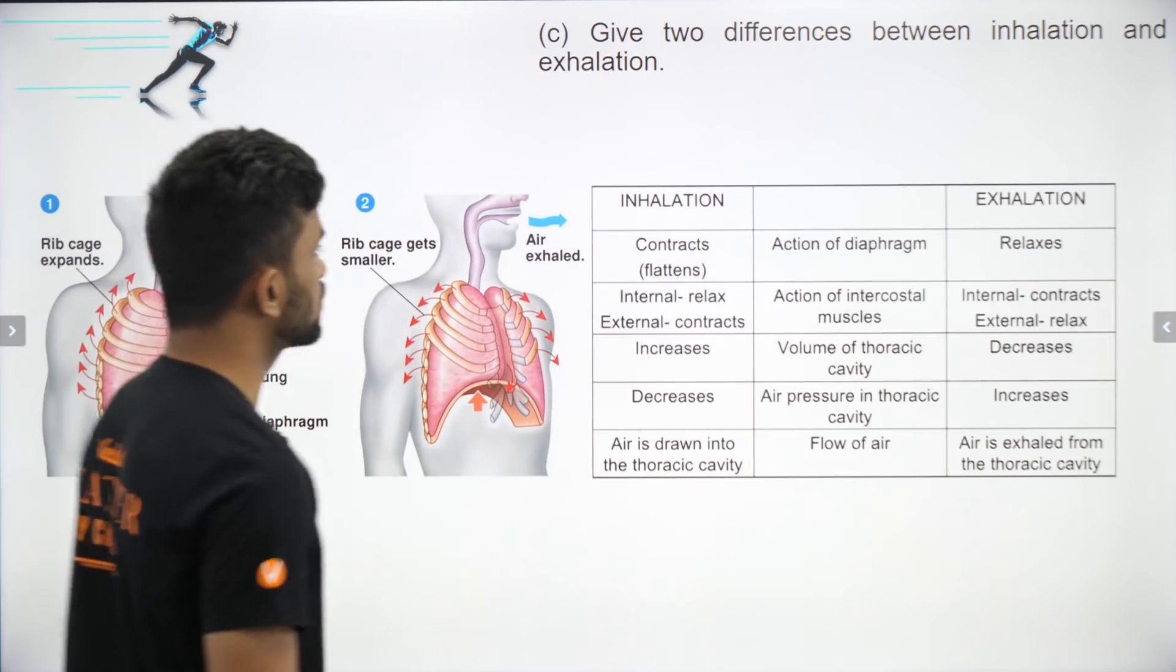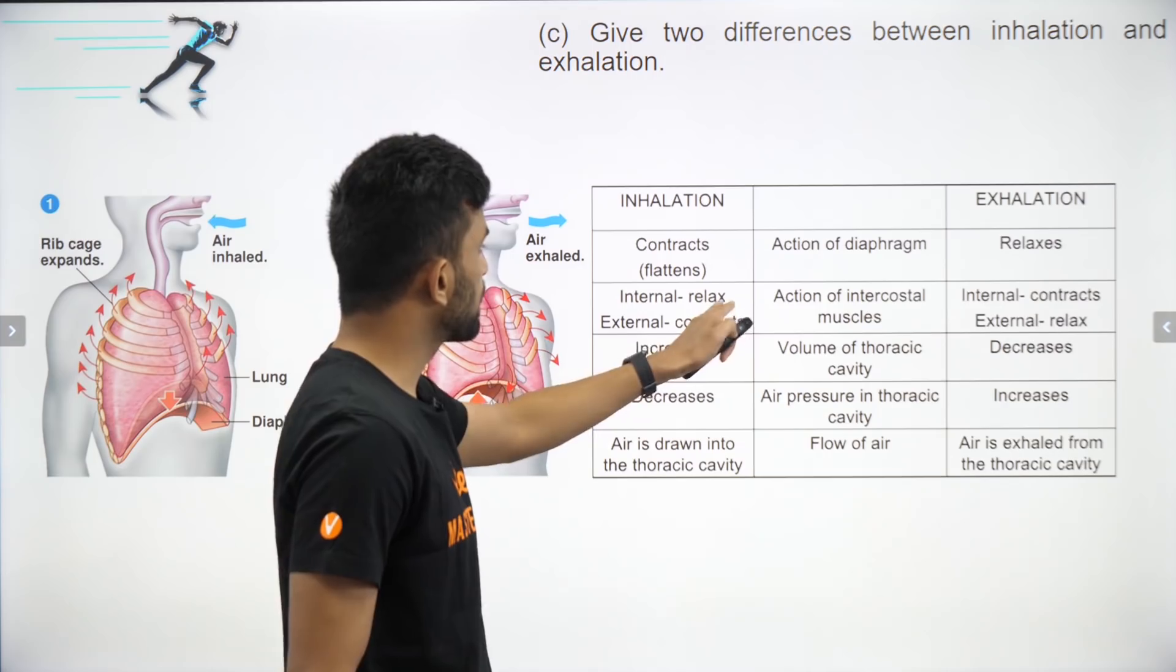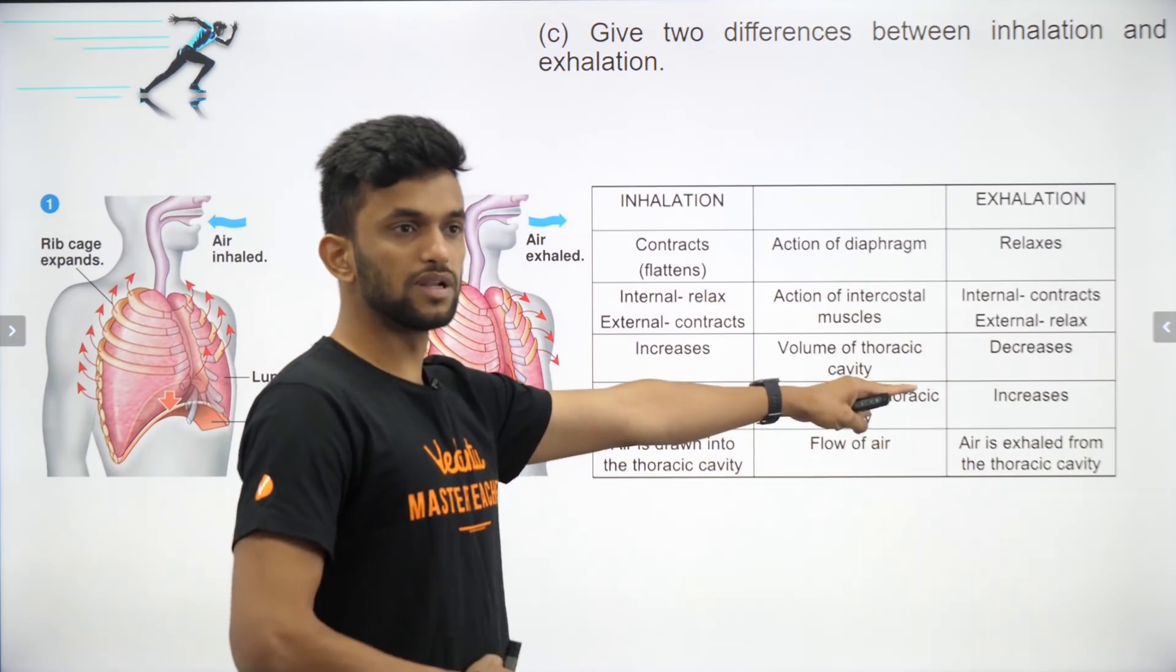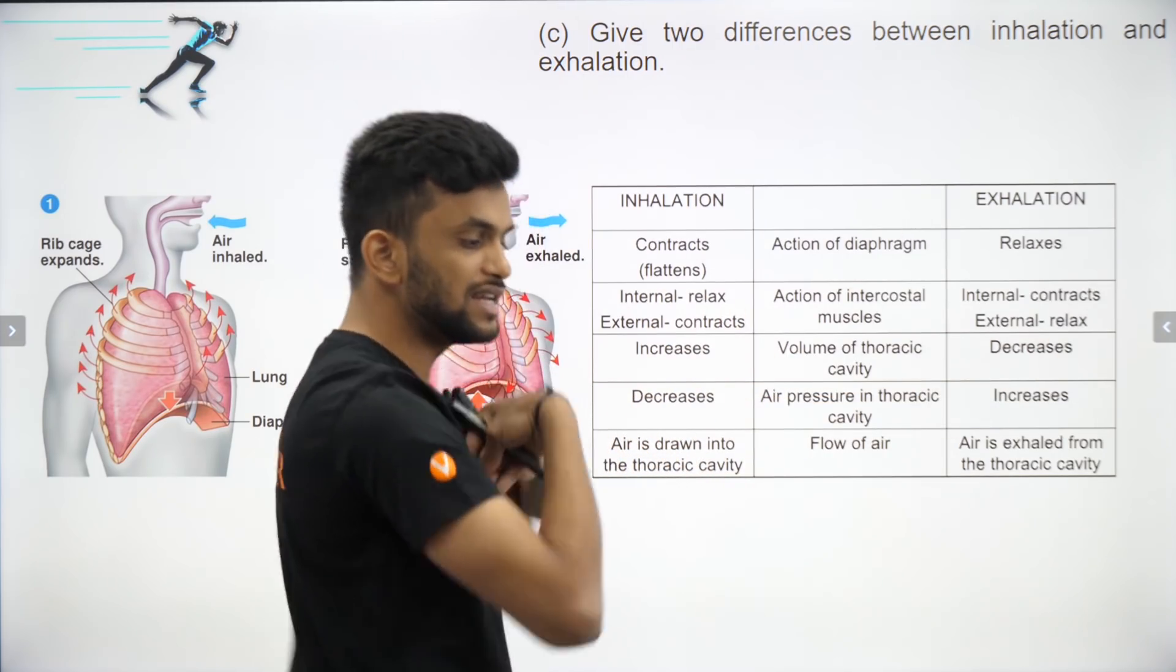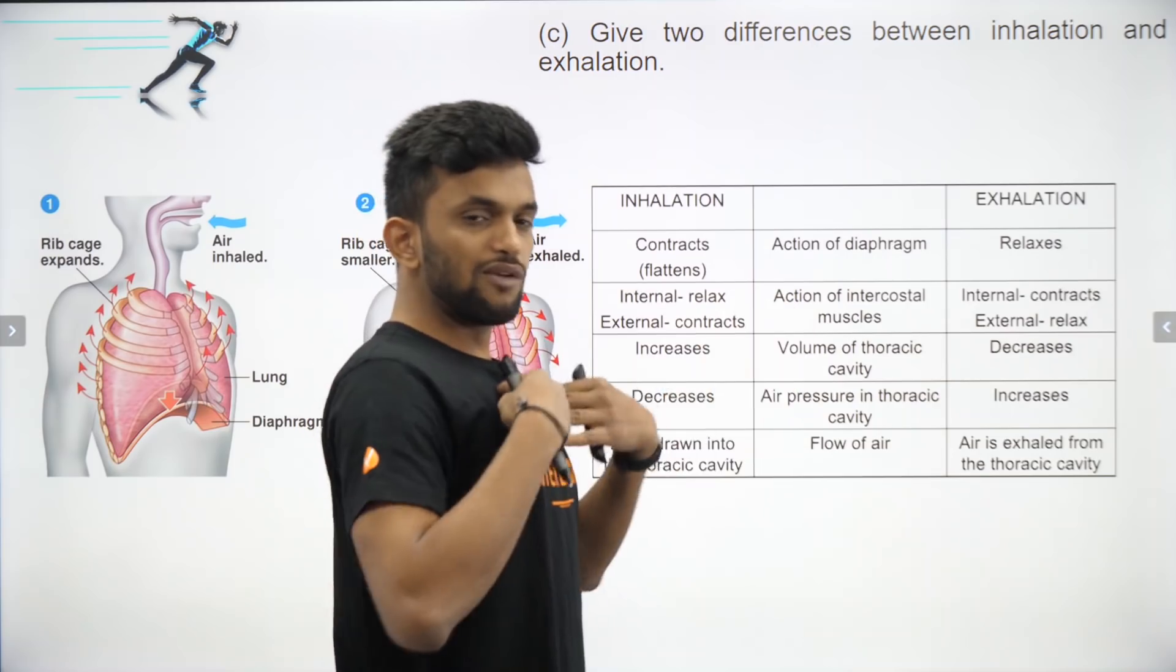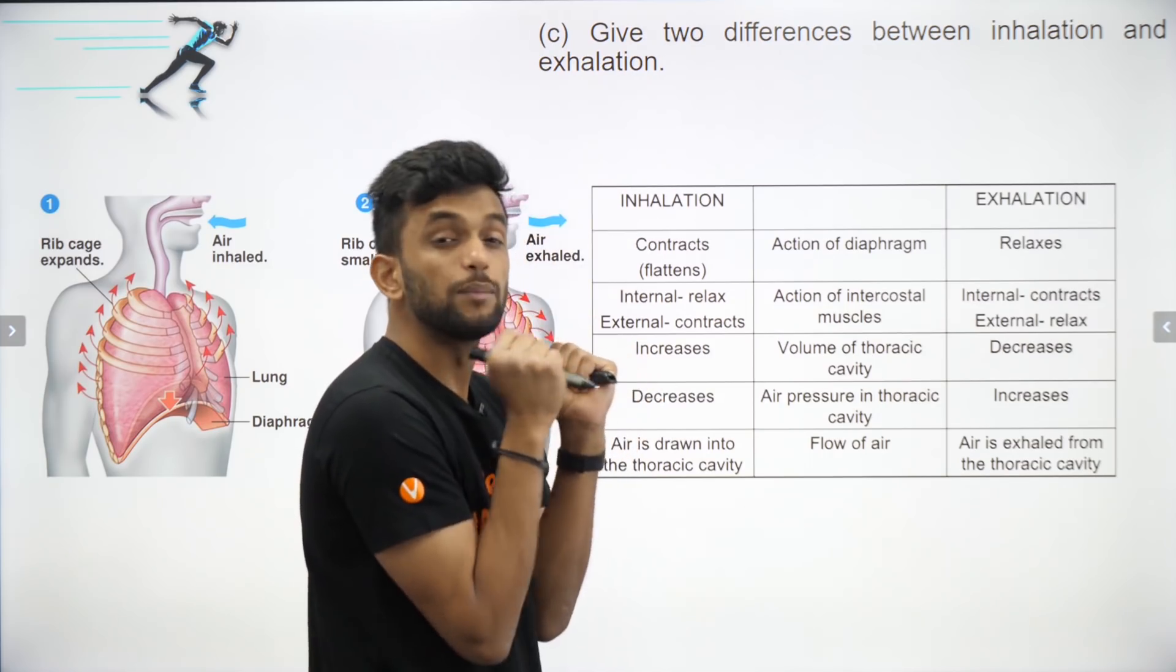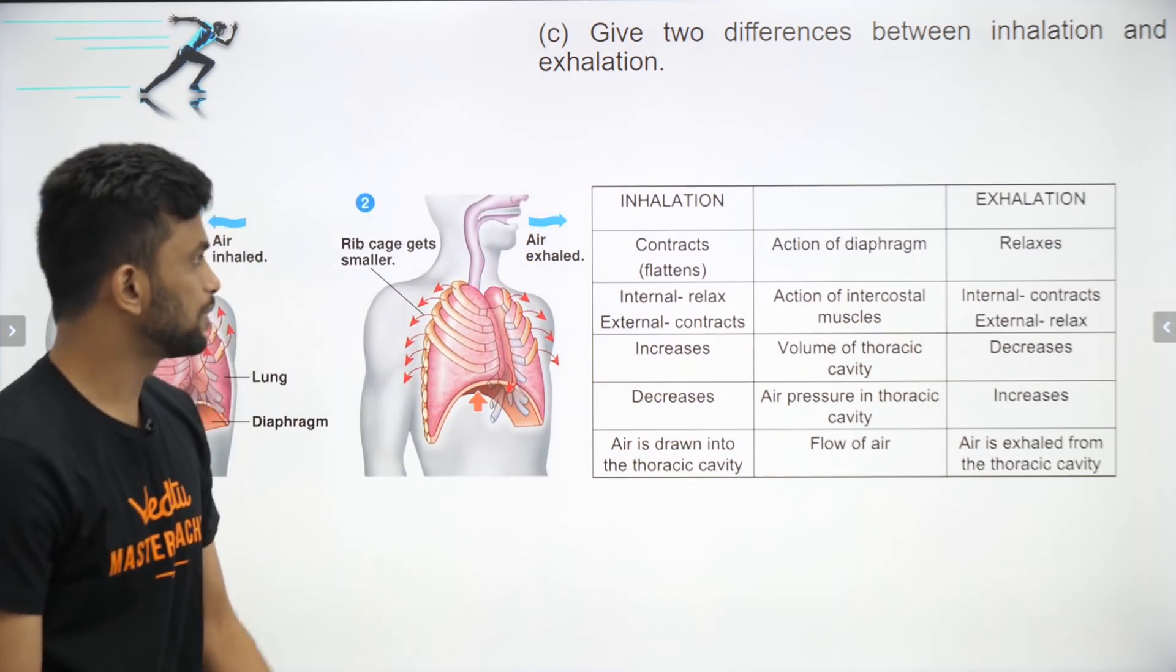Give two differences between inhalation and exhalation. Diaphragm contracts in inhalation, relaxes in exhalation. Intercostal muscles are present in the rib region. Volume increases in inhalation, volume decreases in exhalation. Lung capacity - this thoracic cavity decreases, air pressure inside decreases during inhalation. High pressure goes to low pressure. During exhalation, the pressure inside my lungs is more, outside is less, hence air comes out. When I'm breathing in, the volume increases, the pressure inside becomes less, so air from high pressure goes inside. When I'm exhaling, my diaphragm contracts and the volume inside the lungs becomes less, the pressure inside becomes high, and air comes from high pressure to low pressure.